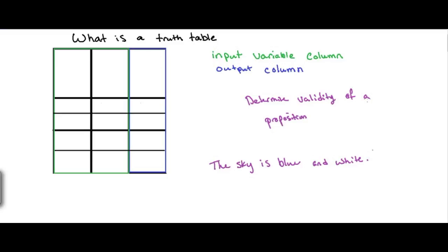So we have two things happening in this proposition. We have the sky is blue and we have the sky is white. Well, a truth table is going to tell us the validity of this statement and when this statement is true.